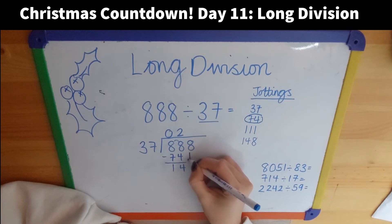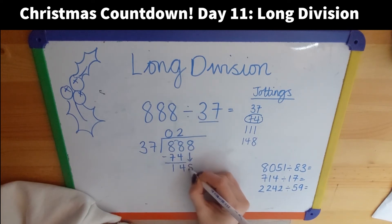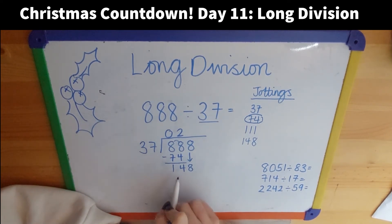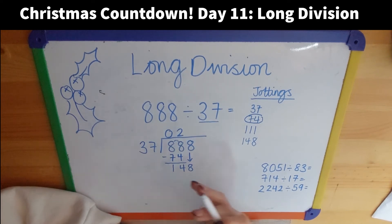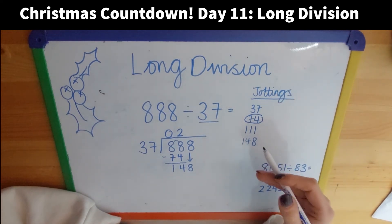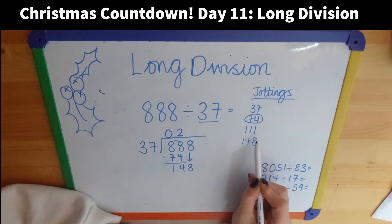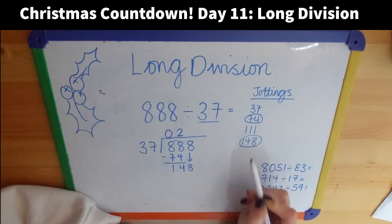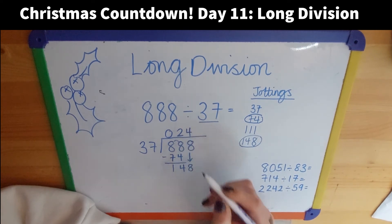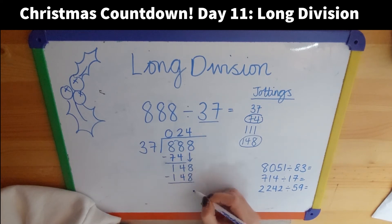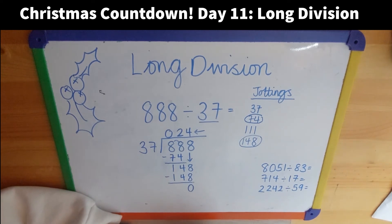I then need to bring down this digit because that's going to become the ones column of the number I'm going to be looking at next. So 37 goes into 148. Because I've already looked on my jottings for this number, I can see that 37 goes into 148 four times. Then I can do 148, and I know that I have no remainder. So my answer therefore is 24.